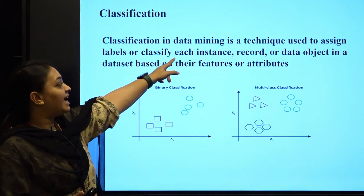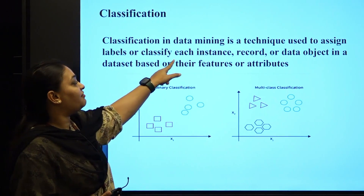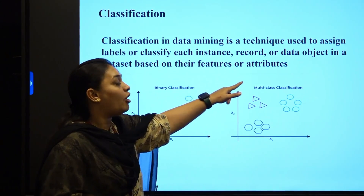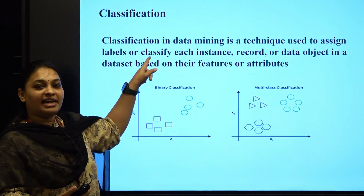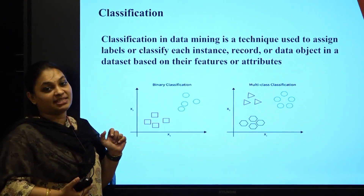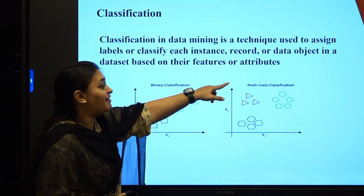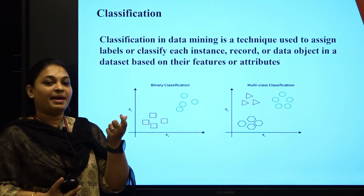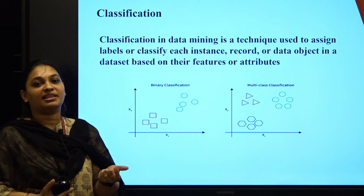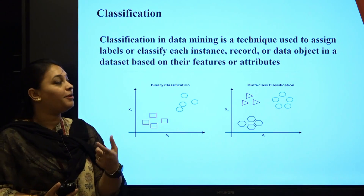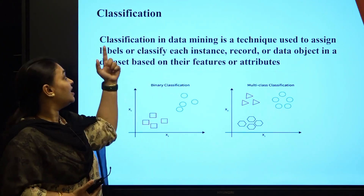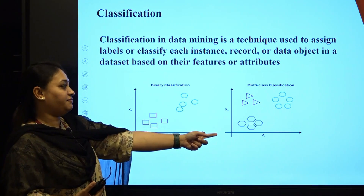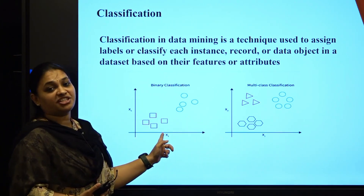Classification in data mining is a technique used to assign labels or classify each instance, record, or data object in the dataset based on their features or attributes. For example, in student details, I classify based on roll number, name — those are my attributes. Based upon the attributes, I define my instance. You have binary classification and multi-classification — these are the two types of classifications.